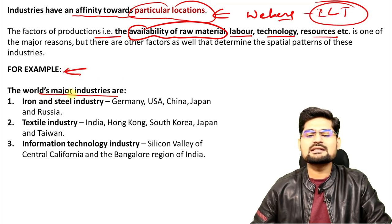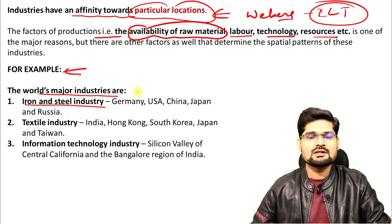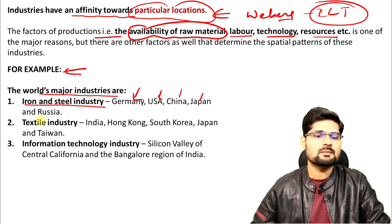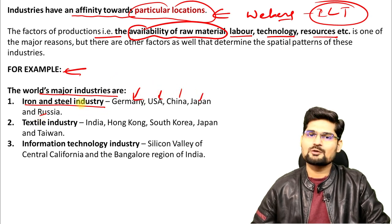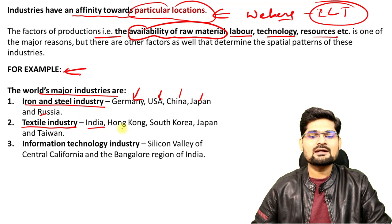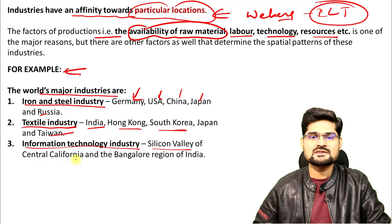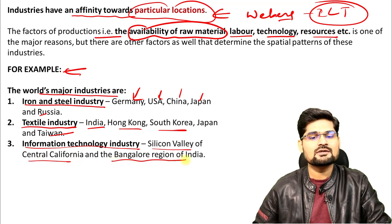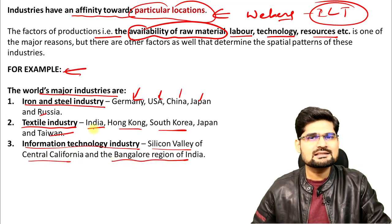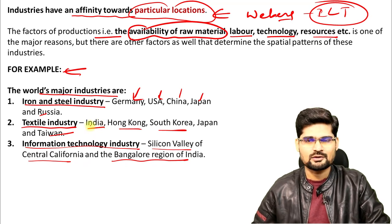Looking at world's major industries: the iron and steel industry is located in Germany, USA, China, Japan, Russia, and India. The textile industry is concentrated in India, Hong Kong, South Korea, Japan, and Taiwan. The information technology industry has Silicon Valley in central California, and Bangalore, Delhi NCR, Hyderabad and several other places in India as major hubs.